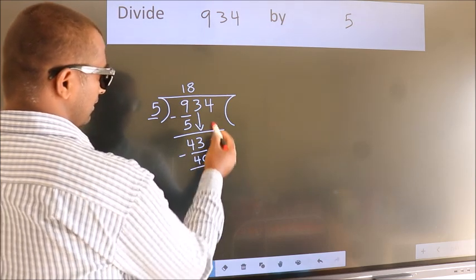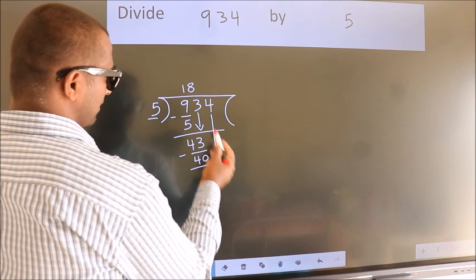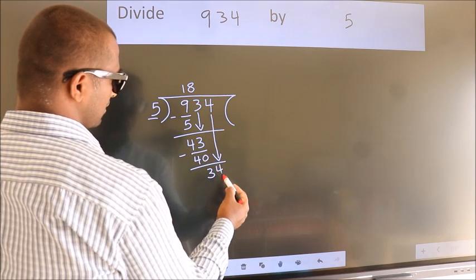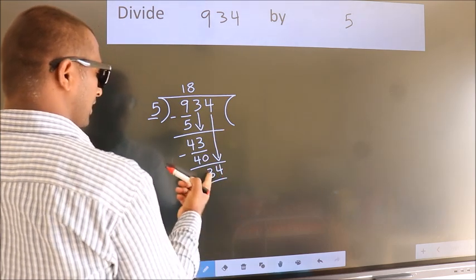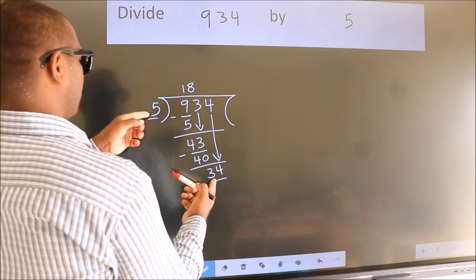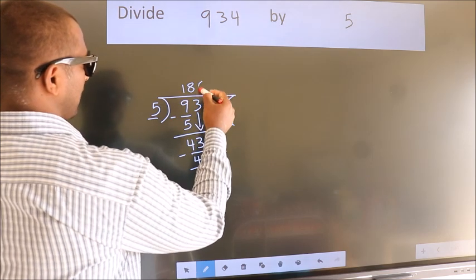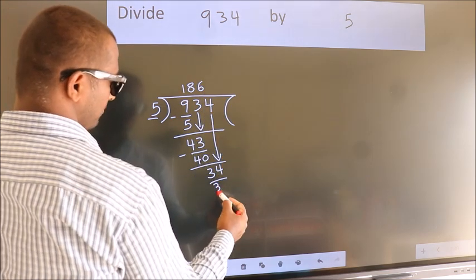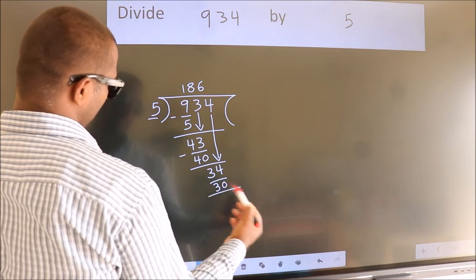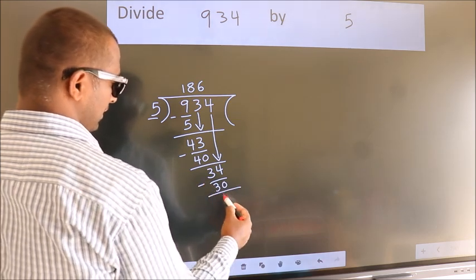After this, bring down the next number. So 4 down. So 34. A number close to 34 in the 5 table is 5 times 6 is 30. Now we subtract. We get 4.